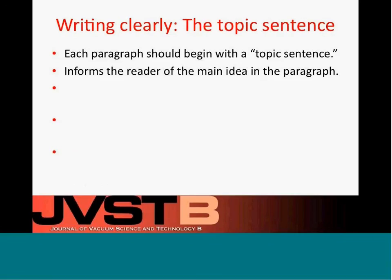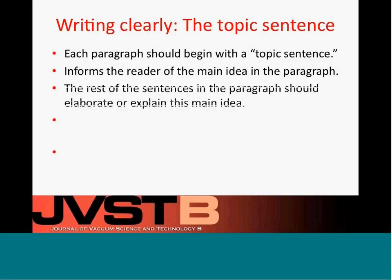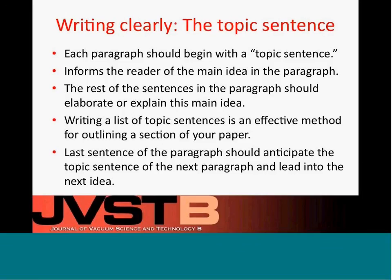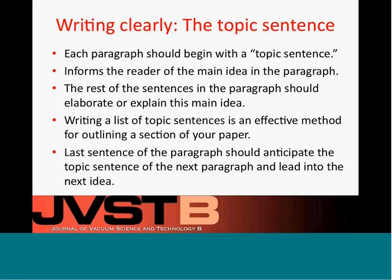The second point that helps in writing clearly is the use of the topic sentence. Each paragraph begins with a topic sentence that informs the reader of the main idea in the paragraph. The rest of the sentences should elaborate or explain the main idea. An effective method of outlining sections of your paper is to write a list of topic sentences. The last sentence of a paragraph should anticipate the topic sentence of the next paragraph, making the writing more fluid and connected.